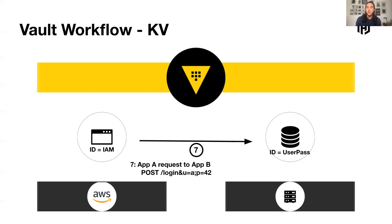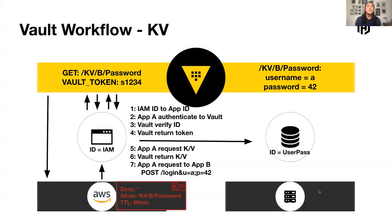Now my application can use that data to connect directly to the application on the distant end. Vault isn't in the middle of the actual transaction — it's just providing you with the secret. Along this arrow we see a simplified API request: login with username equals A, password equals 42. And now you should have secure communication between your applications. We don't automate the versioning of basic KV for you, but some patterns do exist that allow you to do that. This covers the basic KV pattern — the bread and butter of Vault and why many folks come to us to start.